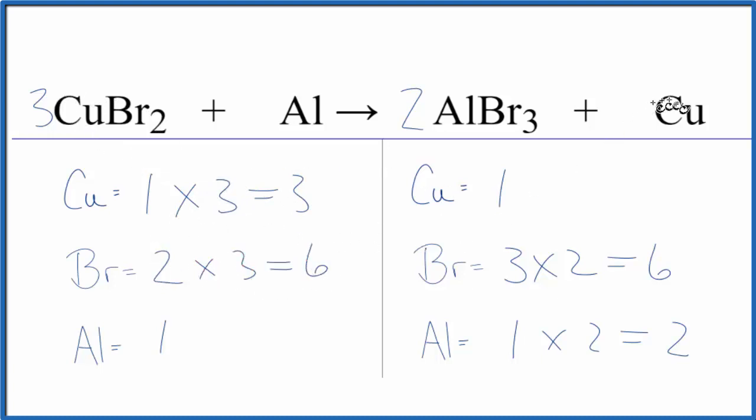And to balance the Coppers, Copper is by itself. I could just put a three here. One times three, that would equal three. And I need to put a two in front of the aluminum as well. And this equation is balanced.